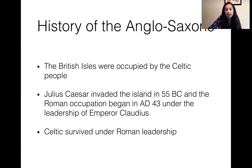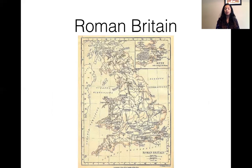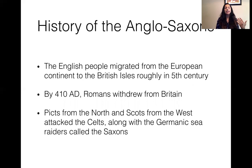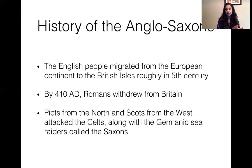Here is a map of Roman Britain. You are welcome to enlarge this and pause the video to view the map. This is how Roman Britain looked in 400 AD, before the invasion of the Germanic tribes. The Germanic tribes are really what we call the English people. English did not originate in England — it came as a language from the European subcontinent into England around the 5th century.